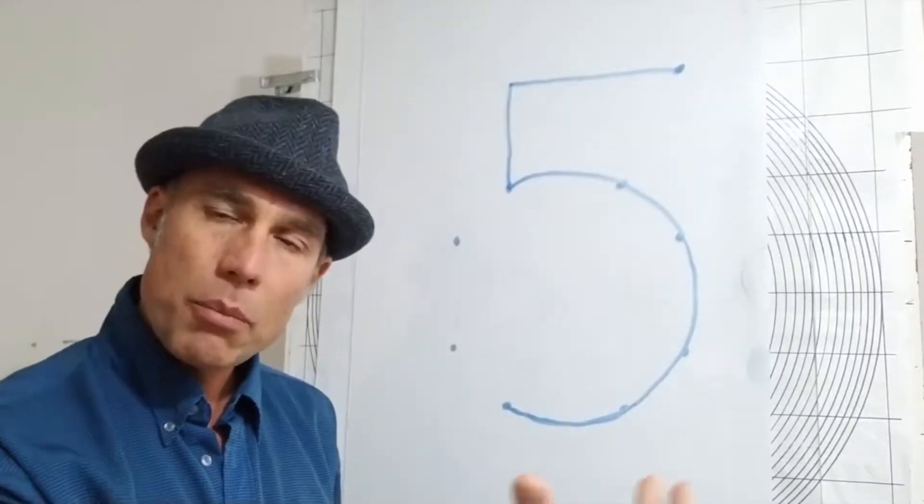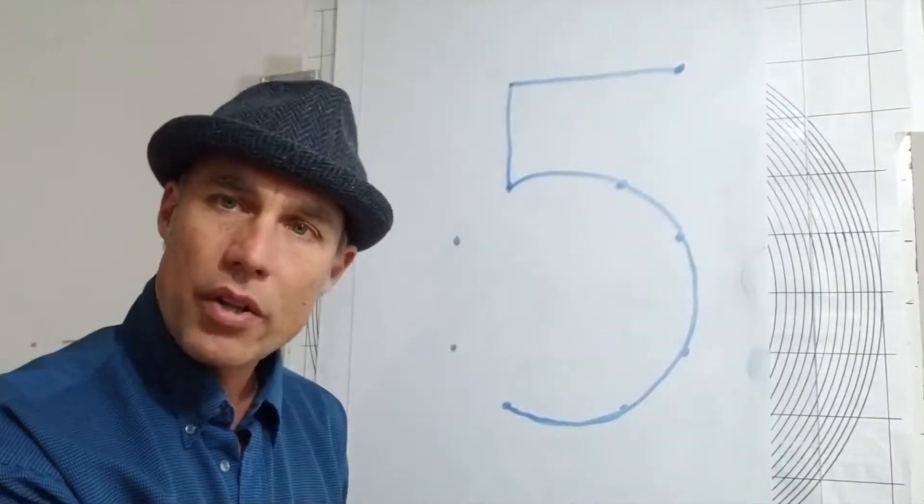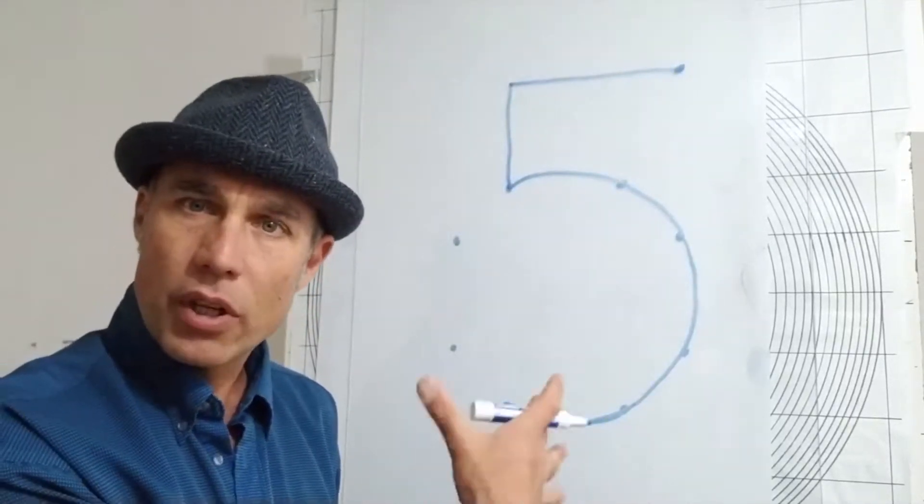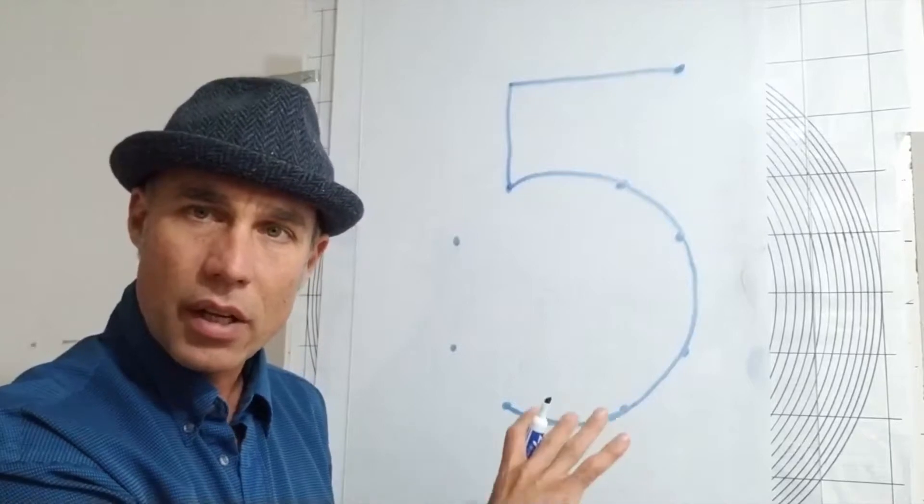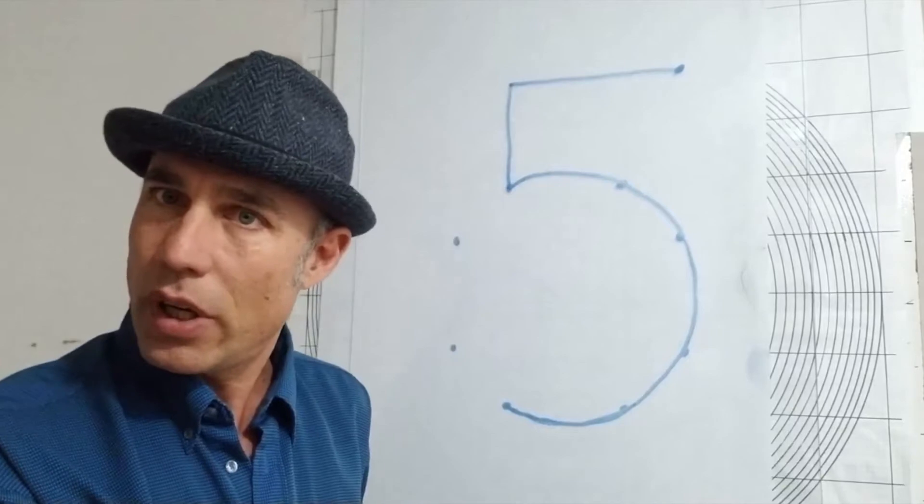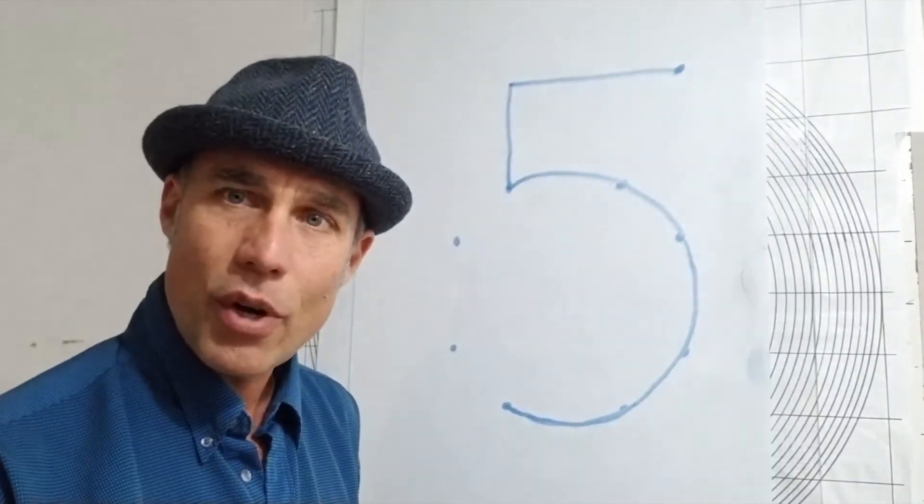Now I'm going to jump ahead a couple more and I'm going to do why the numeral eight has the shape that it does using the same logic. We're going to look at the coordinate points where the eighth circle in the series fits on the grid and why the numeral eight looks the way it does. Alright, thanks for watching.